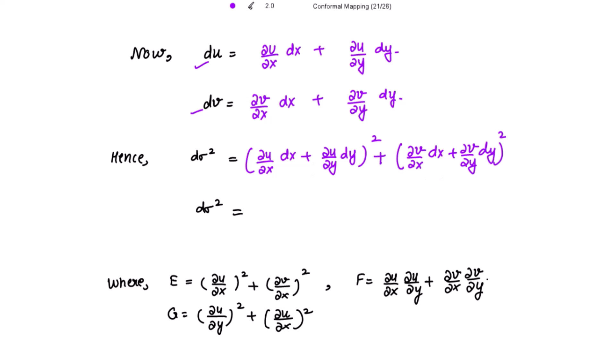Hence, dσ² = du² + dv² = [(∂u/∂x)dx + (∂u/∂y)dy]² + [(∂v/∂x)dx + (∂v/∂y)dy]². When you expand this, you get terms in dx², dy², and 2·dx·dy. Denote the coefficient of dx² as E, the coefficient of dy² as G, and the coefficient of 2·dx·dy as F, where E = (∂u/∂x)² + (∂v/∂x)², F = (∂u/∂x)(∂u/∂y) + (∂v/∂x)(∂v/∂y), and G = (∂u/∂y)² + (∂v/∂y)².